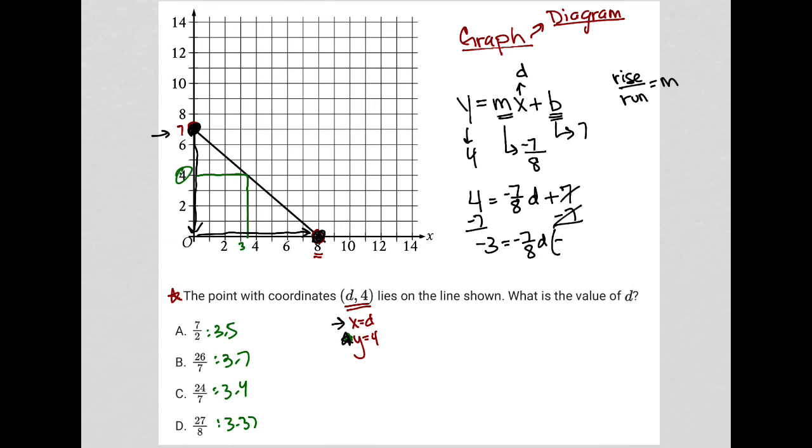I can multiply by negative 8 sevenths, right? The reciprocal of negative 7 eighths. So that these cancel each other out. And then on this side, I have 24 over 7. 24 over 7 is equal to d. So I find my exact value for d.